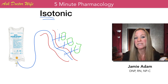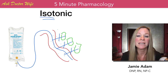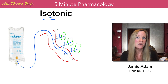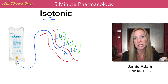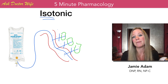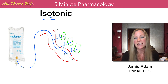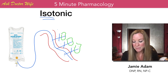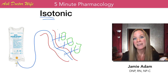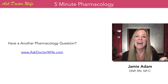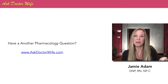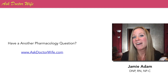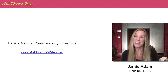A perfect example of an isotonic solution would be 0.9% normal saline. You could also give lactated Ringer's, another common isotonic solution. These are very common because they have the same tonicity as blood, so the fluid stays inside the bloodstream and vascular spaces, helping to boost blood pressure. If you have another pharmacology question, please go to askdrwife.com and ask your question.